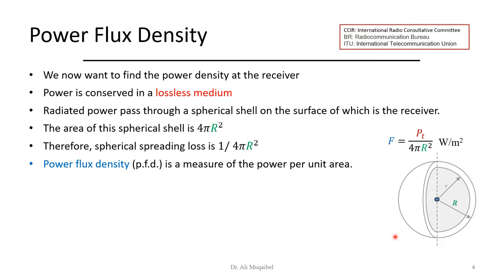We can start by assuming that the medium is lossless, which means the wave we transmit will propagate and spread in the medium. But to be more practical, some mediums will cause losses and not all the signal will propagate. The power passes through a spherical shell, and the area of this sphere is 4πR². So the flux density is P_T divided by 4πR². The power flux density is also referred to as PFD and its unit is watts per meter squared.